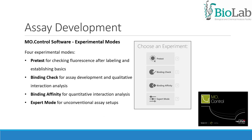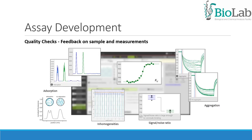The Monolith software has four experimental modes: the pretest for checking fluorescence after labeling; binding check for assay development and qualitative interaction analysis; binding affinity for quantitative interaction analysis; and the expert mode for unconventional assay setups. The software gives instant information about the quality of your assays. Adsorption, aggregation, fluorescence inhomogeneities, and low signal-to-noise ratios should be avoided for a successful assay.